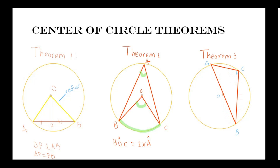So if AOB is a diameter, this theorem is saying that angle ACB is equal to 90 degrees.